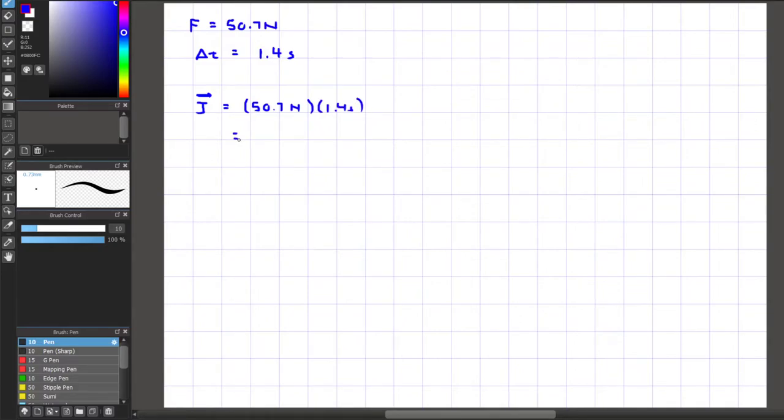By multiplying the two values, we get an answer of 70.98 N second. So N second is one of the units for impulse, and then since the direction is kind of ambiguous, we can just leave a positive sign for this problem here.